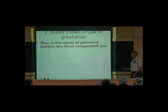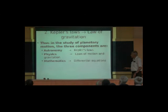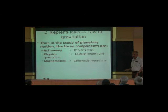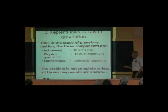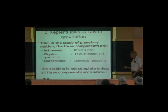In the study of planetary motion, the three components are: astronomy, which gives Kepler's laws; physics, which gives laws of motion and gravitation; and mathematics, which gives differential equations used to solve those equations. The problem is not complete unless all three components are known. Laws of motion and gravitation were necessary to apply to Kepler's laws, and mathematics was the ability to solve the equations that had been set up. These three are important components.